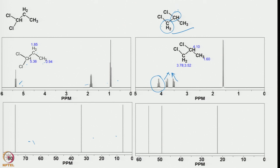As a result of second-order splitting, we are seeing a doublet for one of the signals. There are 3 signals in both 1H and 13C NMR for 1,2-dichloropropane.